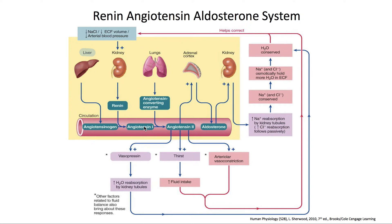How does angiotensinogen get converted to angiotensin 1? Well, the kidneys secrete something called renin, and renin gets secreted by granular cells, which can be activated in a number of ways. The first way is that the granular cells themselves have internal baroreceptors which, when they detect low blood pressure, cause them to secrete renin. The second way is by the macula densa cells, which are able to detect low amounts of salt in the blood, which then activates the granular cells to secrete renin. Lastly, the sympathetic nervous system is able to stimulate the granular cells when blood pressure falls as well.